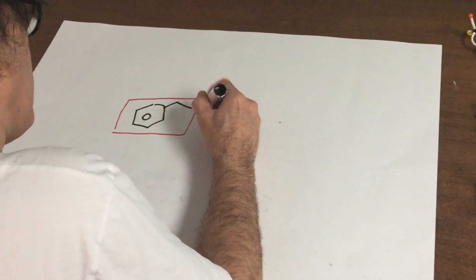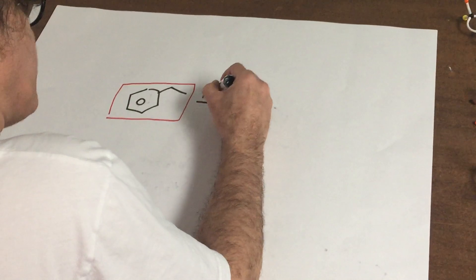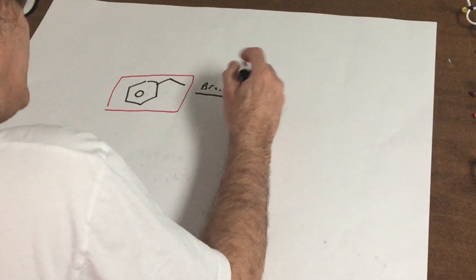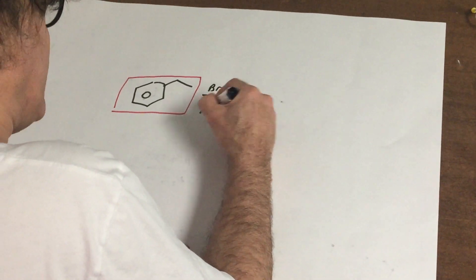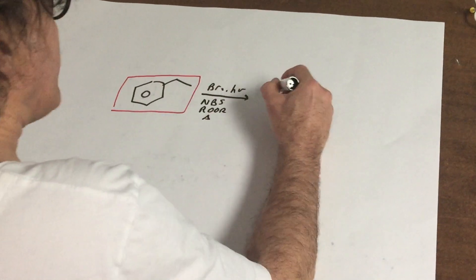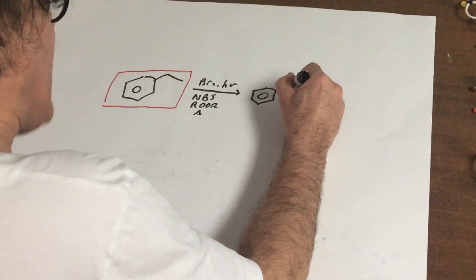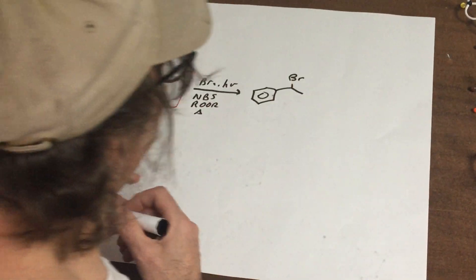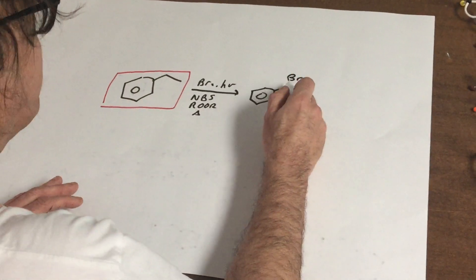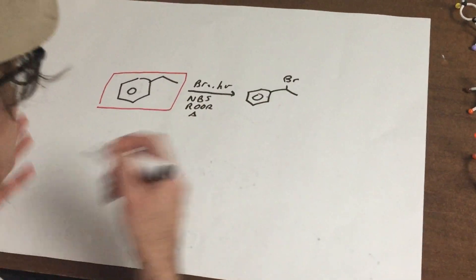Now, what I can do is I can treat this with bromine and light, or I can use NBS with peroxide and heat. Both of these reactions will be free radical reactions, and the bottom line is they will put a bromine on the benzylic carbon. So we're going to replace the hydrogen, one off the benzene ring, and put a bromine on.